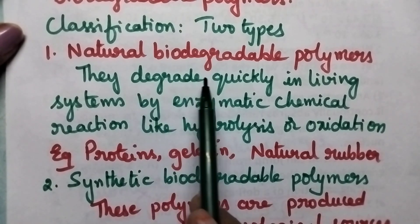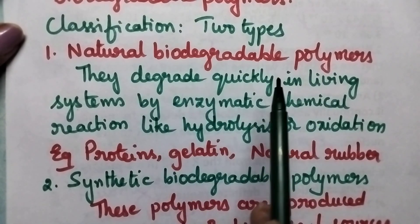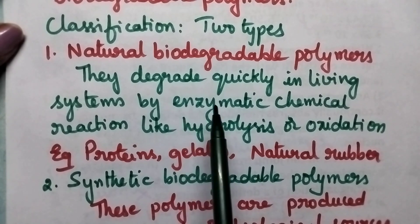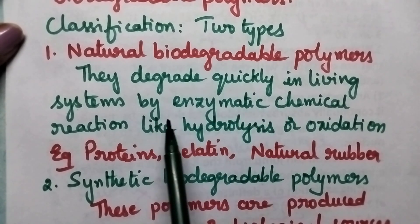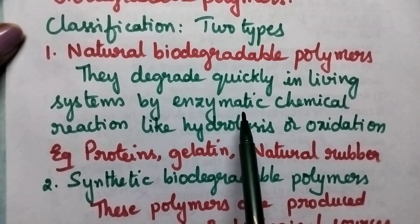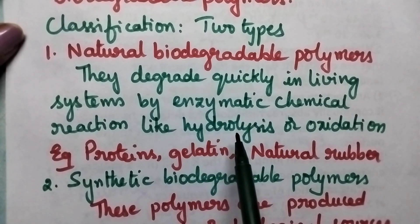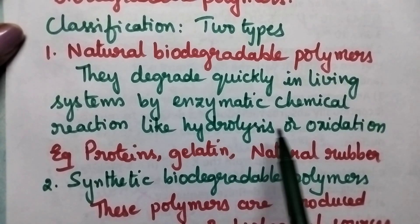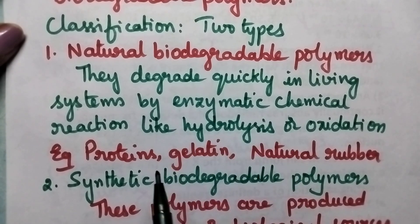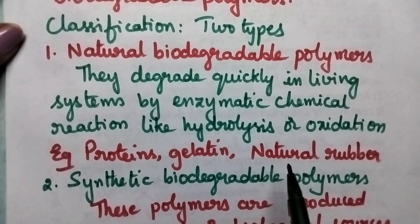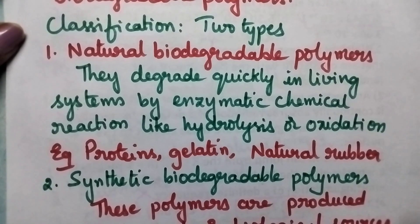Natural biodegradable polymers undergo degradation very quickly in living systems because of enzymatic chemical reactions like hydrolysis or oxidation. Good examples for natural biodegradable polymers include proteins, gelatin, natural rubber, wool, and silk.